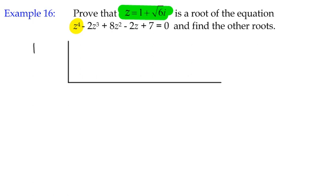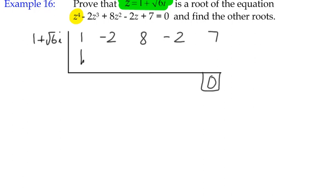We can do synthetic division with a complex solution. We're told that 1 + √6i is a solution, which means if we put the coefficients in, we should end up with zero at the end. We drop the 1 down, multiply by 1 + √6i to get 1 + √6i, then add it to −2. Since −2 is real, we add it to the real part: −2 + 1 = −1, giving us −1 + √6i.